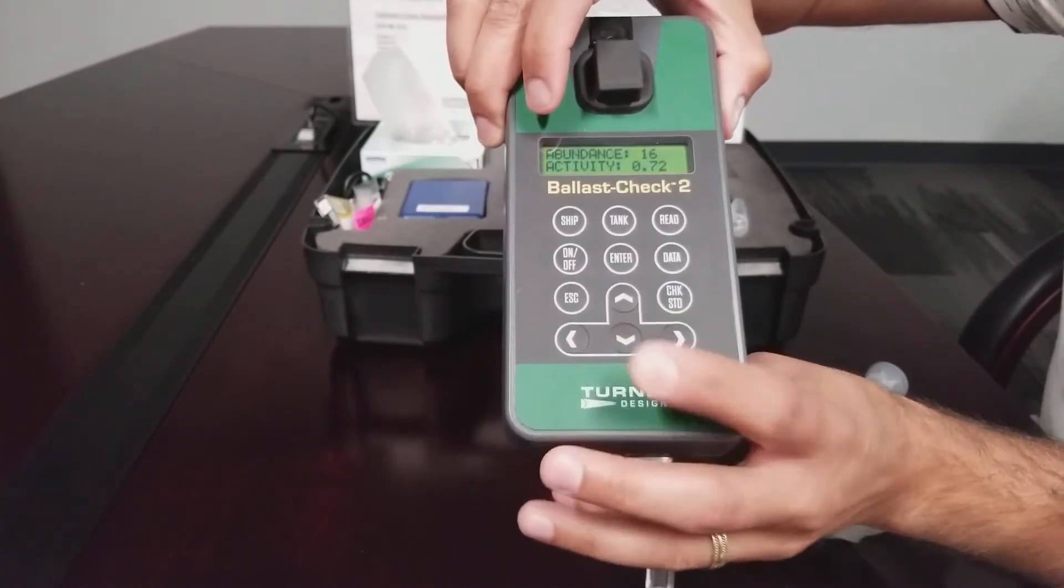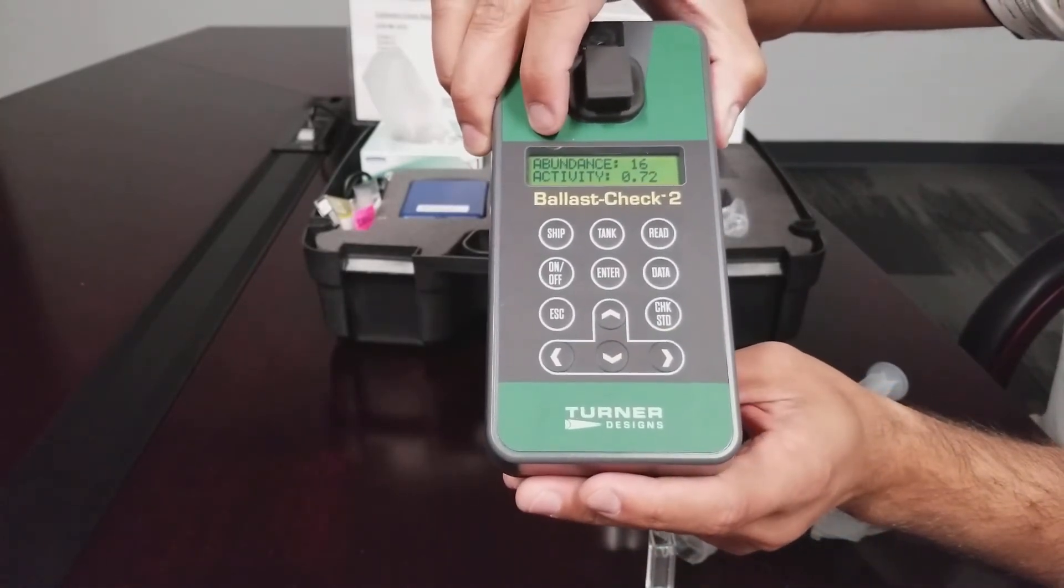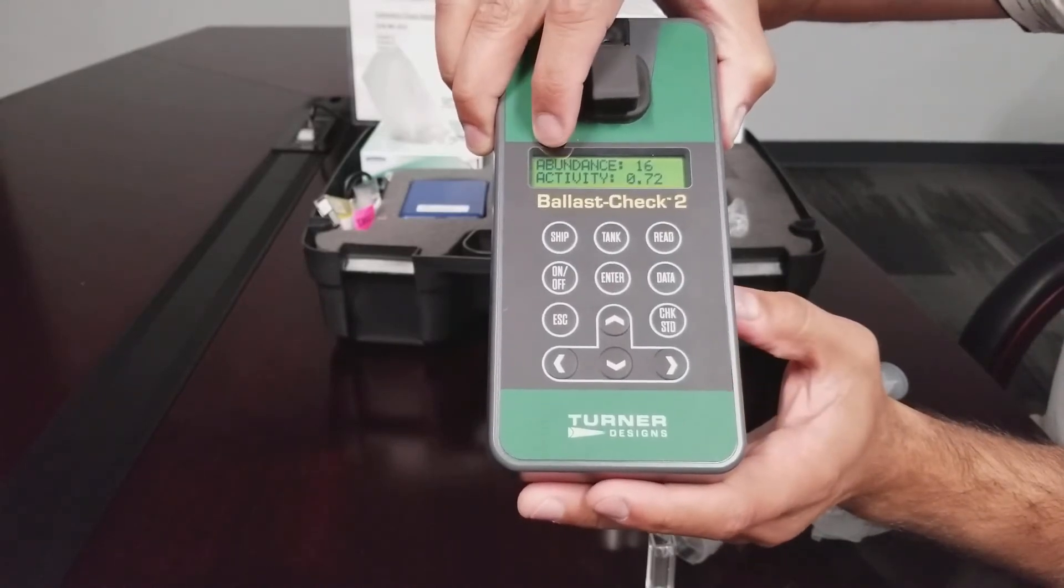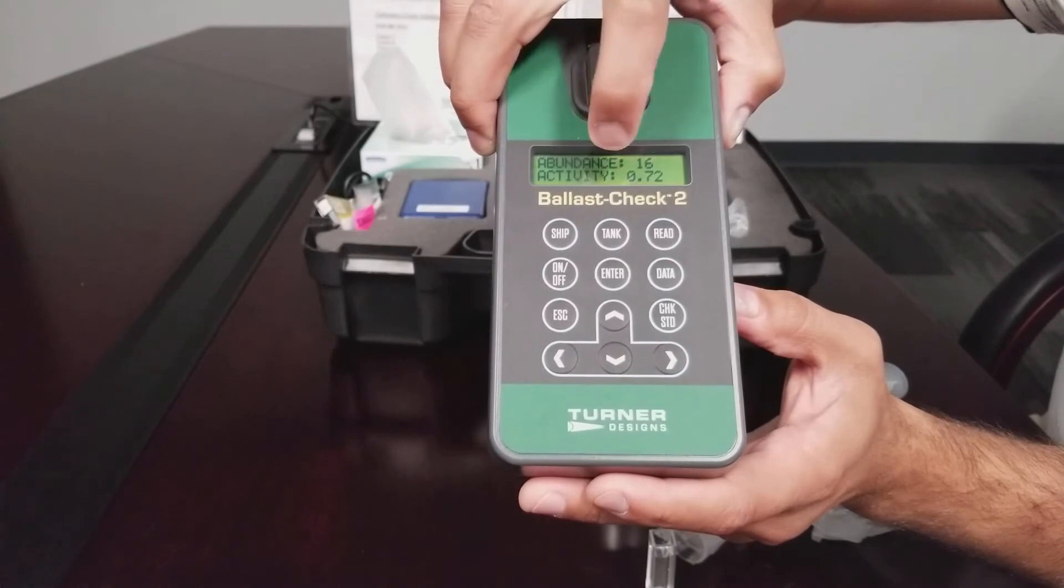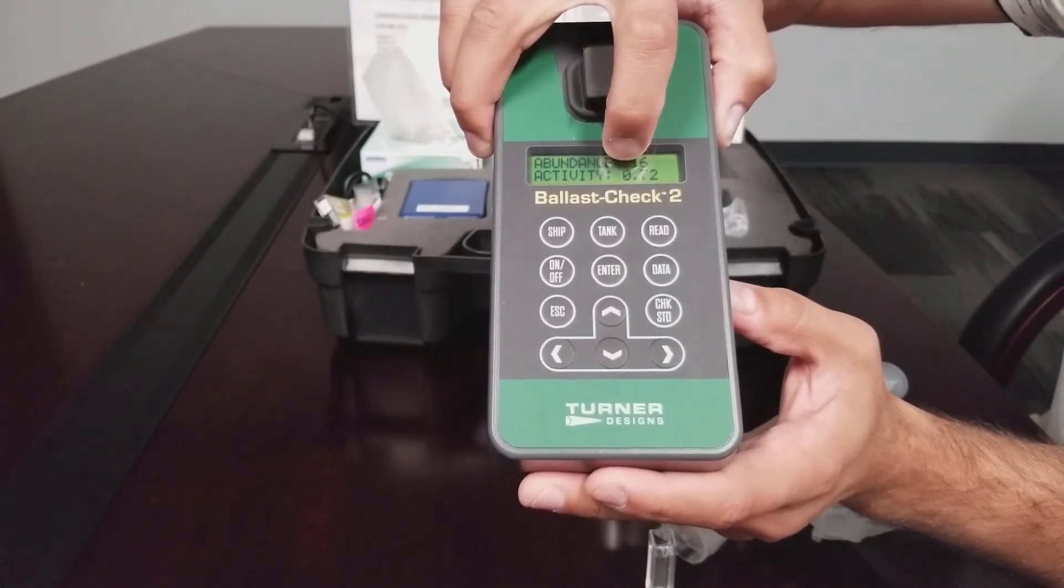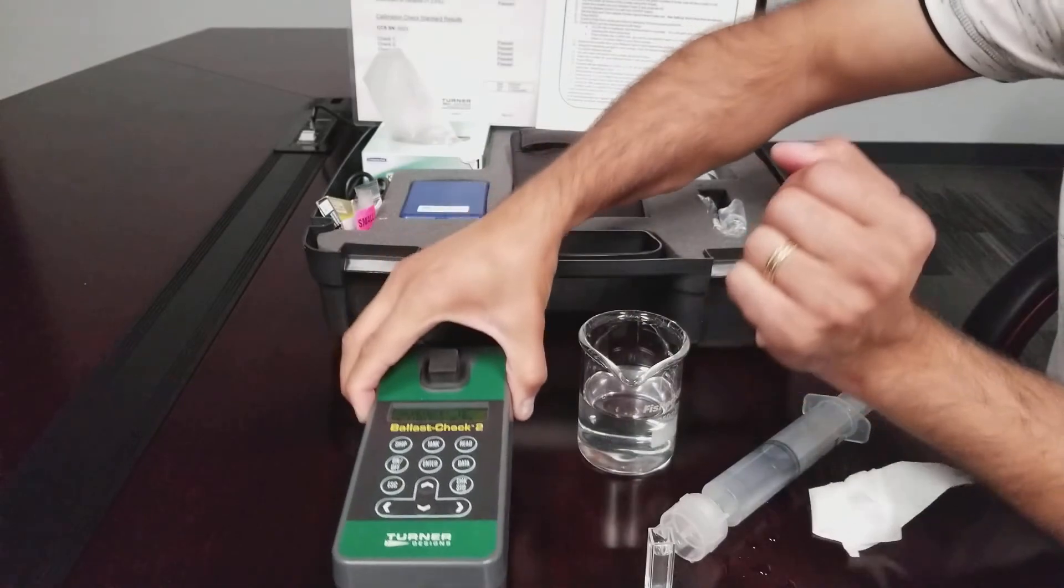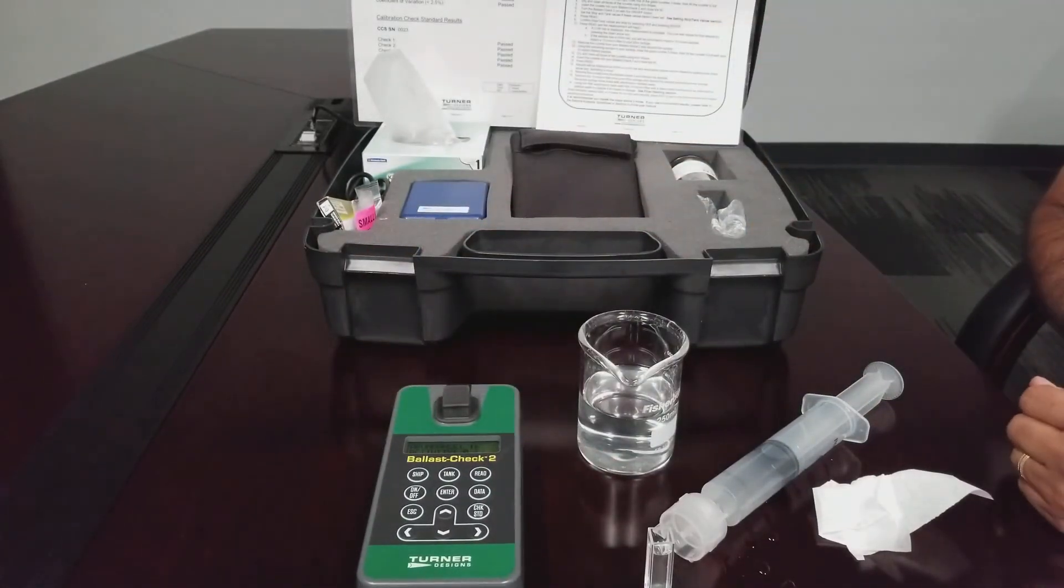Press the down arrow button to view the factors used in calculating risk. Abundance is a quantity of cells per mil. Activity indicates health or viability of cells in the sample.